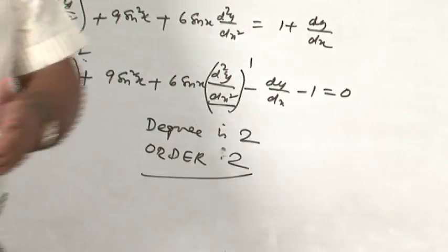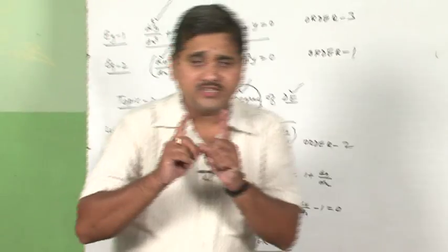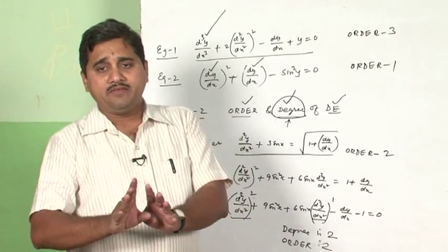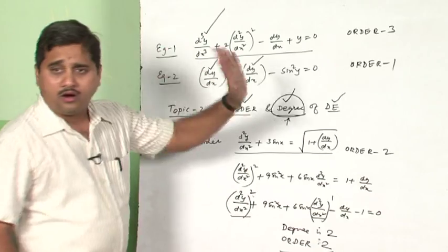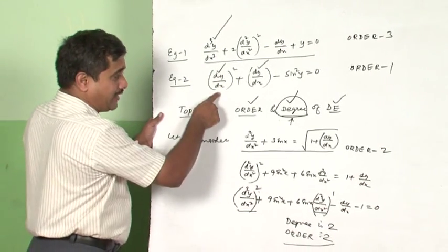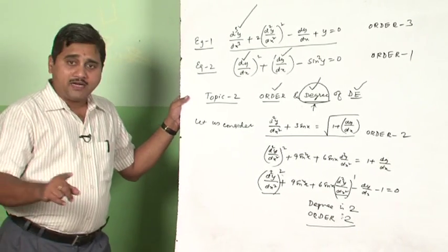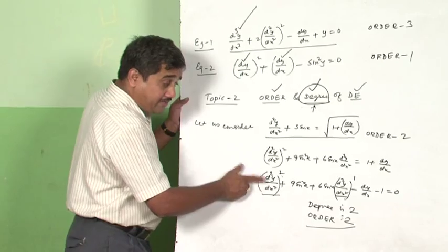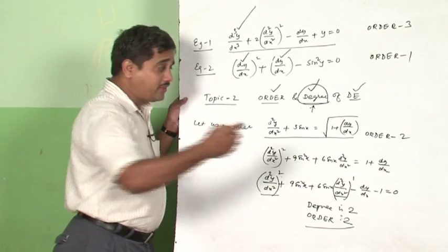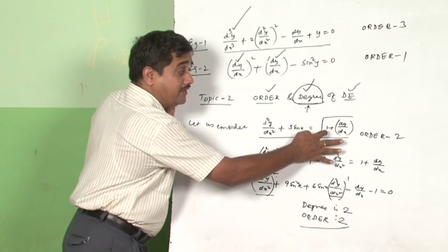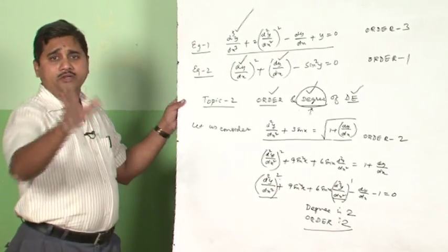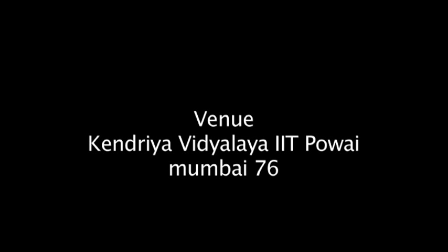To summarize: the order of a differential equation is the highest-order derivative present in it — for instance, 3 or 1 in our earlier examples. The degree of a differential equation is the degree of the highest-order derivative present, after simplifying and removing any radical signs from the differential equation.